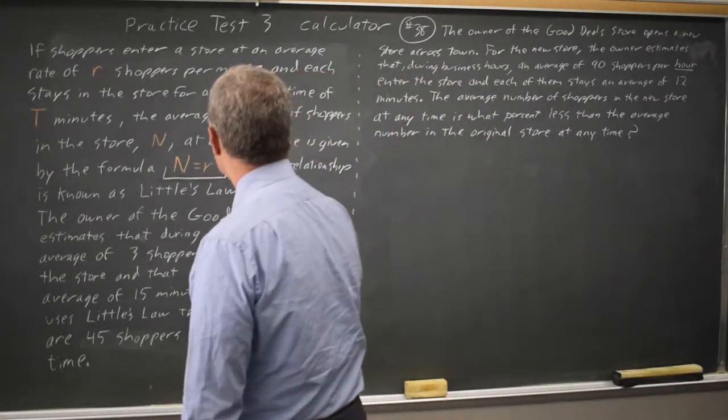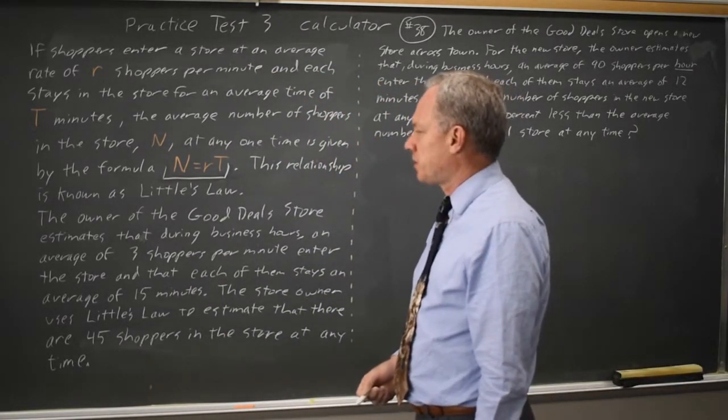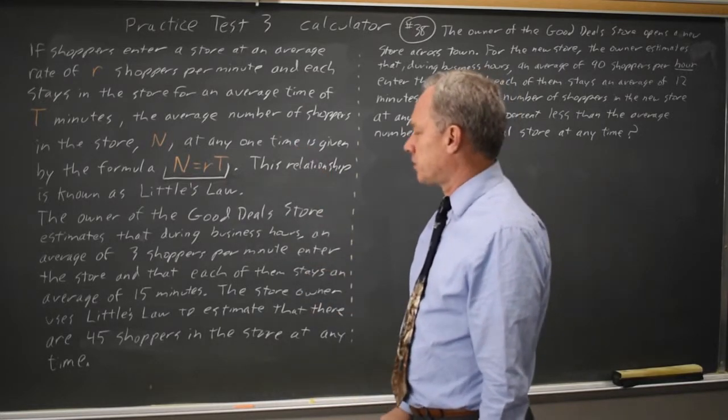N equals RT, where R is the rate at which shoppers enter a store per minute, and T is the average amount of time they spend in that store, and N is the total number of shoppers in the store at any time.